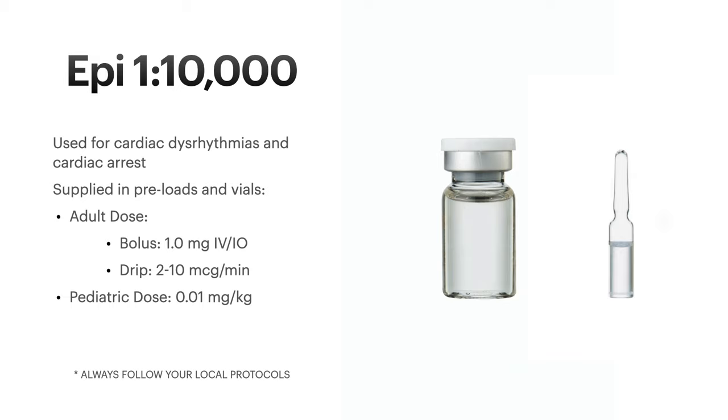And then lastly, epi 1 to 10,000. It's generally used for cardiac dysrhythmias and cardiac arrest. Again, it's supplied in preloads and vials. The adult dose in bolus form is 1 milligram IV or IO push. And if you give it in a drip for bradycardias or shock, you're going to be giving it in 2 to 10 mics per minute dosages, generally through an IV pump.